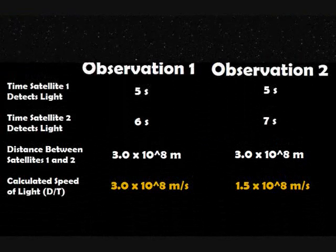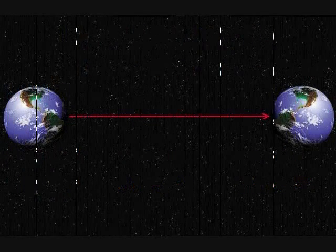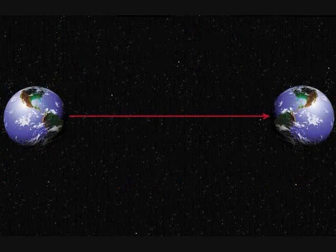So notice now when we compare our two observations, we get a different calculated speed of light because of the relative speed of the satellites in Observation 2. Now let's take this a step further.